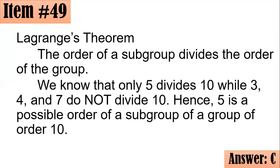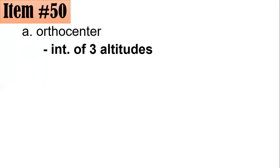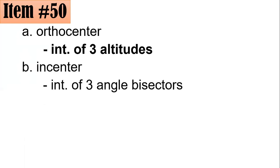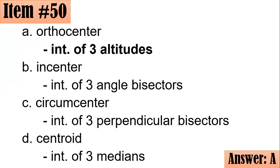Number 50. All altitudes of triangle ACE are drawn and they intersect at point G. What do you call point G? Is it the orthocenter, incenter, circumcenter, or centroid? Remember that orthocenter is the intersection of the three altitudes and is in fact the answer to this question. Incenter is that of the angle bisectors, the circumcenter is the intersection of the three perpendicular bisectors, and the centroid is the intersection of the three medians. I hope that you answered A.